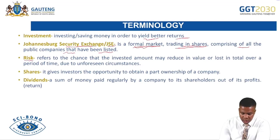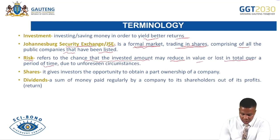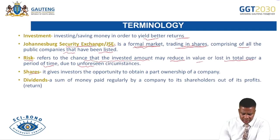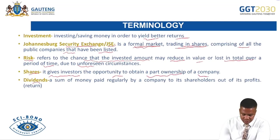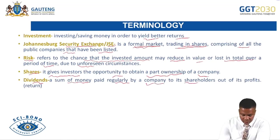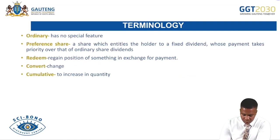Risk refers to the chance that the invested amount may reduce in value or be lost in total over a period of time due to an unforeseen circumstance. Shares give investors the opportunity to obtain part ownership of a company. Dividends refer to a sum of money paid regularly by a company to its shareholders out of its profits — this is considered the return for investing in a company.